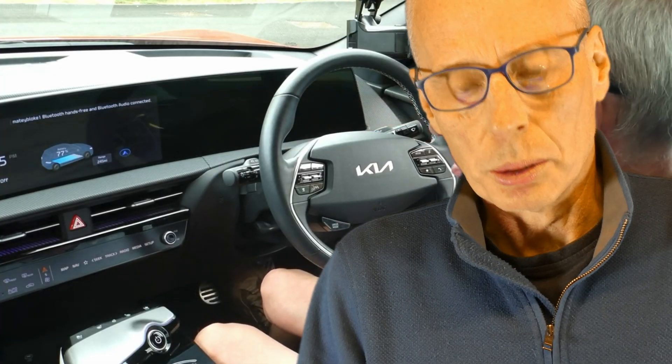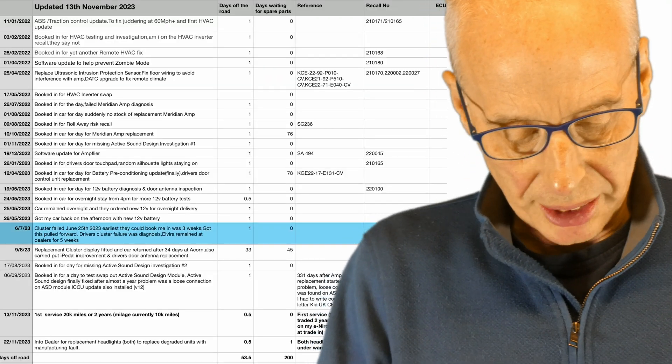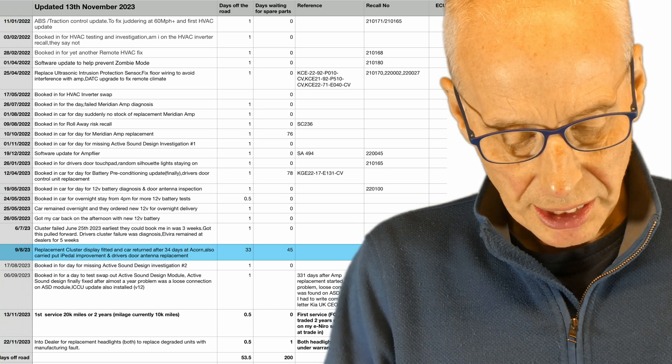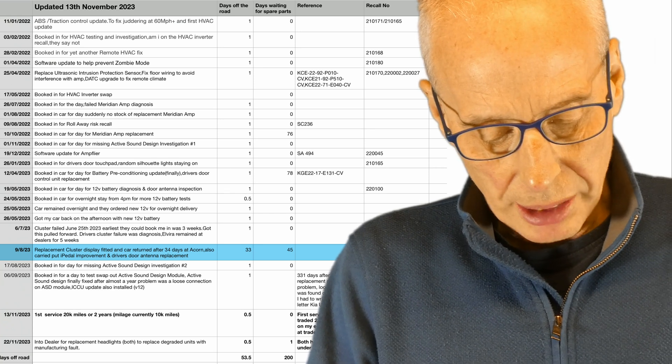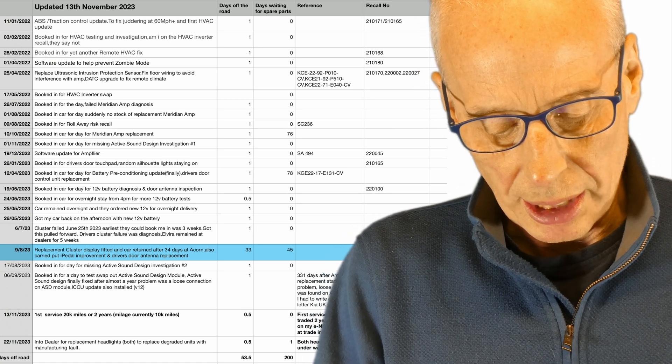On the 25th of June 2023 the driver's display cluster failed and I was stuck waiting for spare parts for three weeks. They gave me an e-Niro 4 trim which I made a few videos about, so that was nice to have, but my car was gone for three weeks. 9th of the 8/23 replacement cluster display fitted and car returned after 34 days. They also carried out the ipedal improvement enhancement and the driver's door antenna replacement.